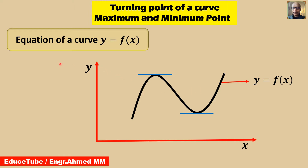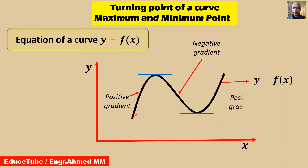I have taken the equation of a curve as y equal to function of x. This is the curve and it is y equal to function of x. This part is positive gradient, this part of the curve is negative gradient, and this part is positive gradient.